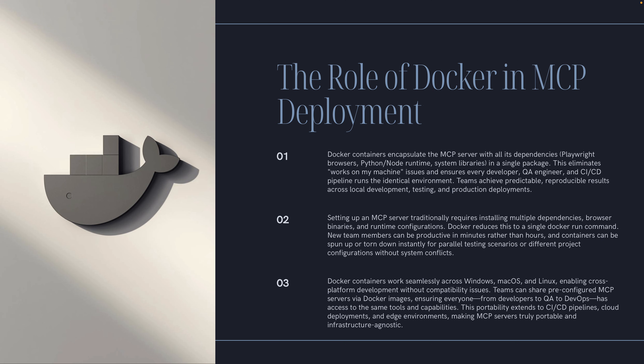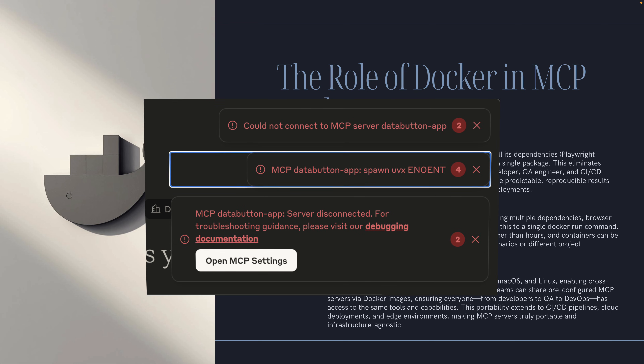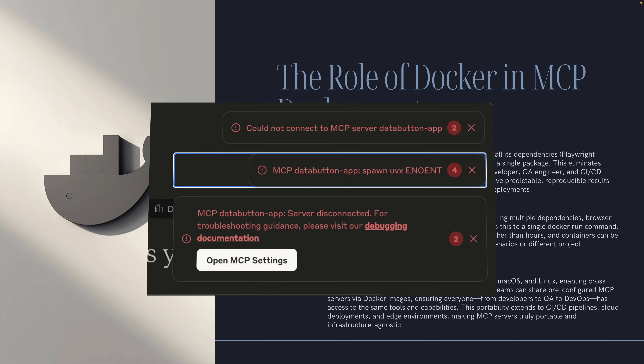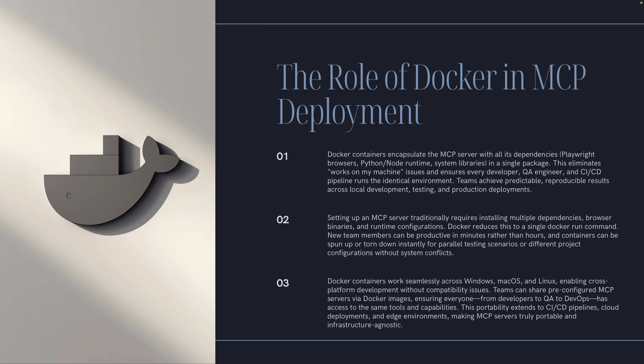Setting up an MCP server traditionally requires installing multiple dependencies — if you're running an npm package or Python-based MCP server, you need all the browser binaries and runtime configurations. But with Docker you don't necessarily need any of these, because Docker reduces this to just a single deployment command and it will run for you regardless. Docker containers also work seamlessly across Windows, Mac, and Linux, enabling cross-platform development, and most importantly while running in GitHub or Azure DevOps pipelines it reduces a tremendous amount of overhead.